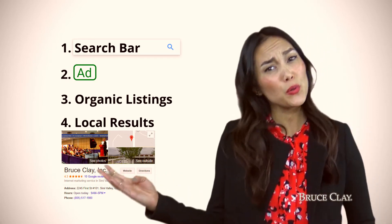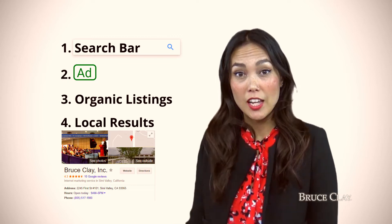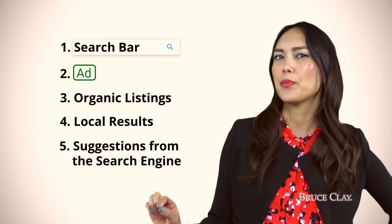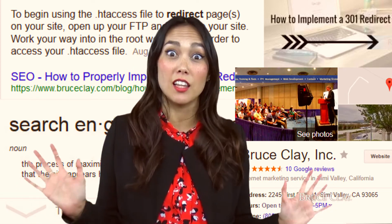Moving on to part four: local results. These are the ones you see with a map and some star ratings. When you're vying for one of these spots, you're doing local SEO. The last section is actually a lot of different search features, but they have one thing in common — they're suggestions from the search engine to help the searcher find what they're looking for. This includes things like 'people also ask,' search suggestions, 'people are also searching for,' answer boxes, direct answers, and knowledge panels. Basically, these are results that don't take the searcher off of the search results page — it's just more info right there.